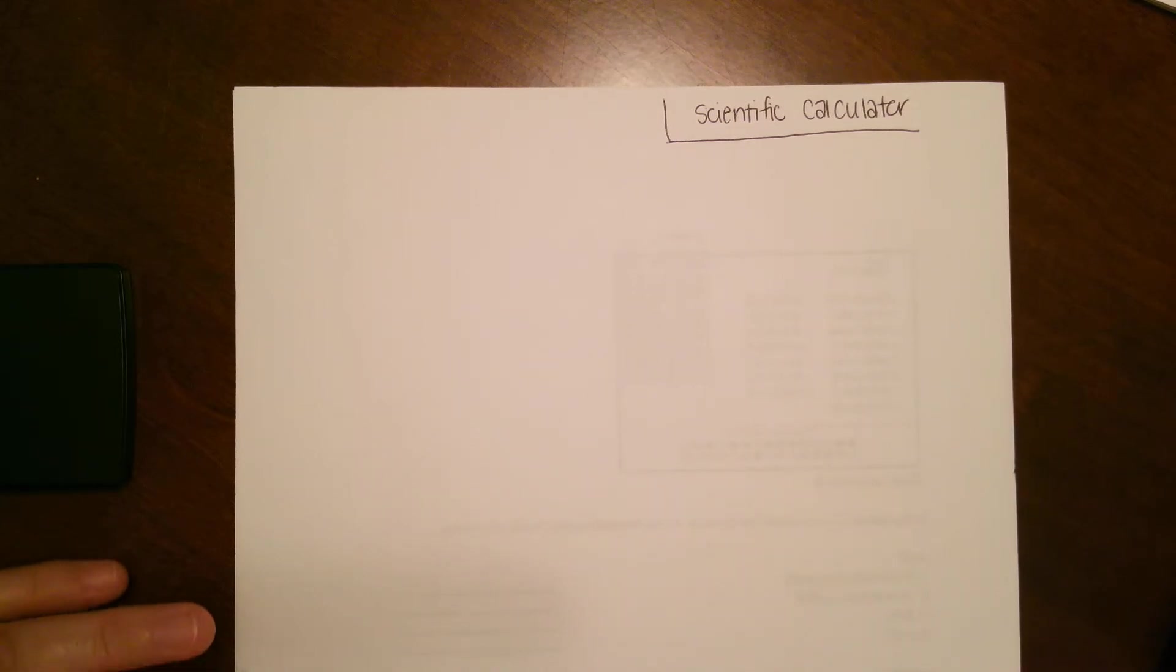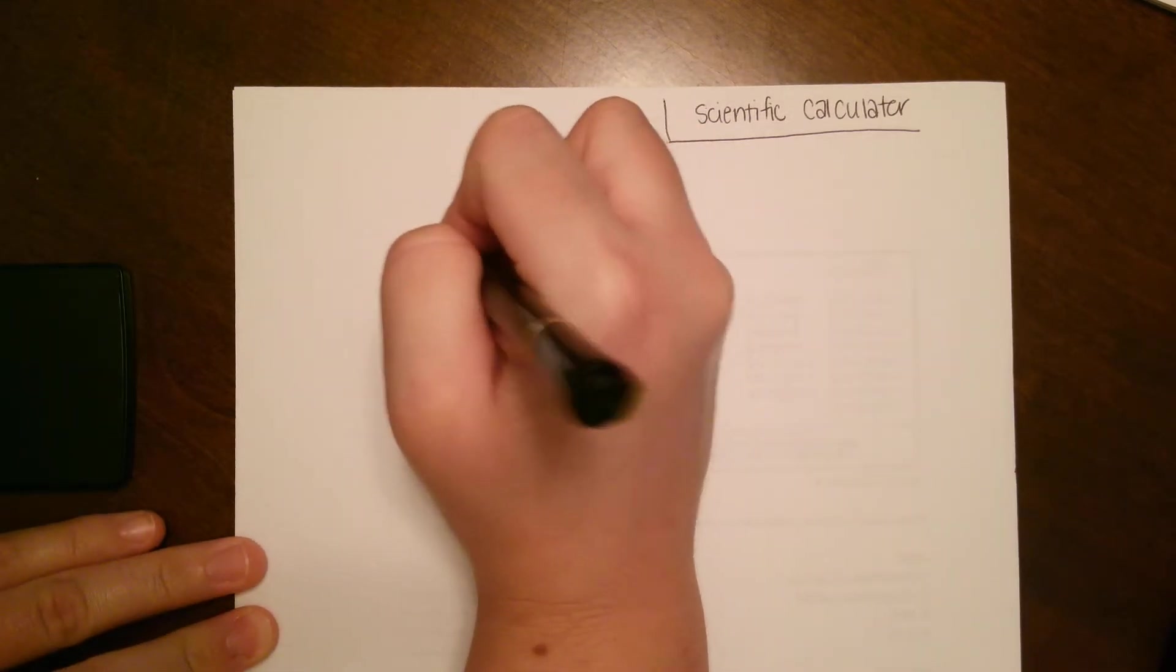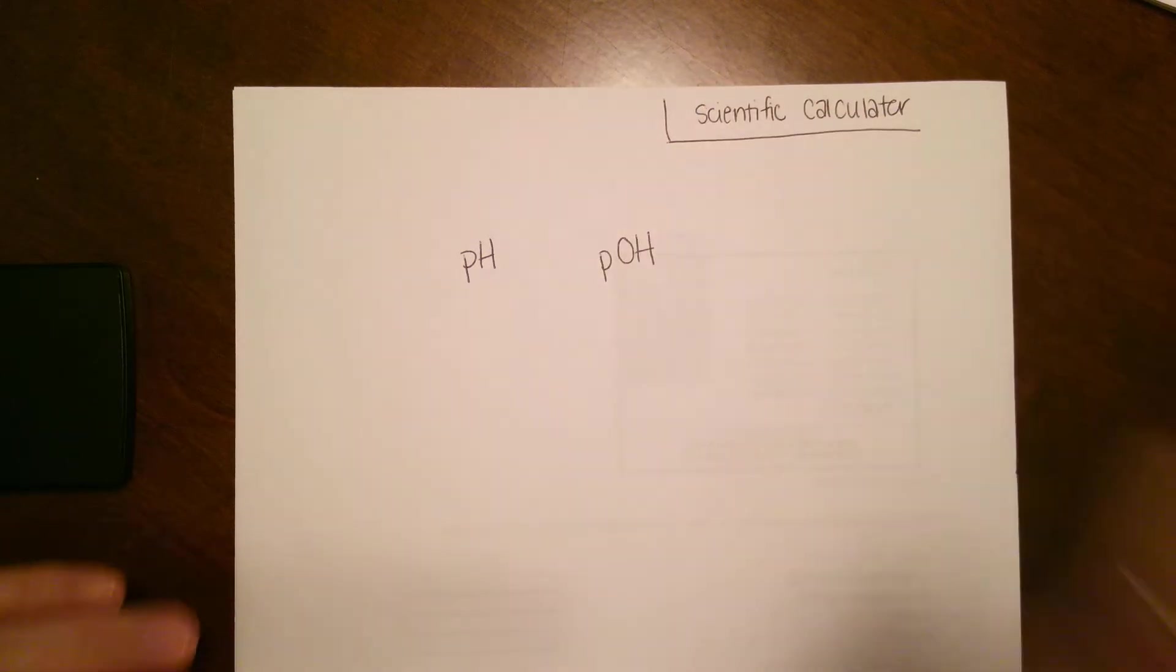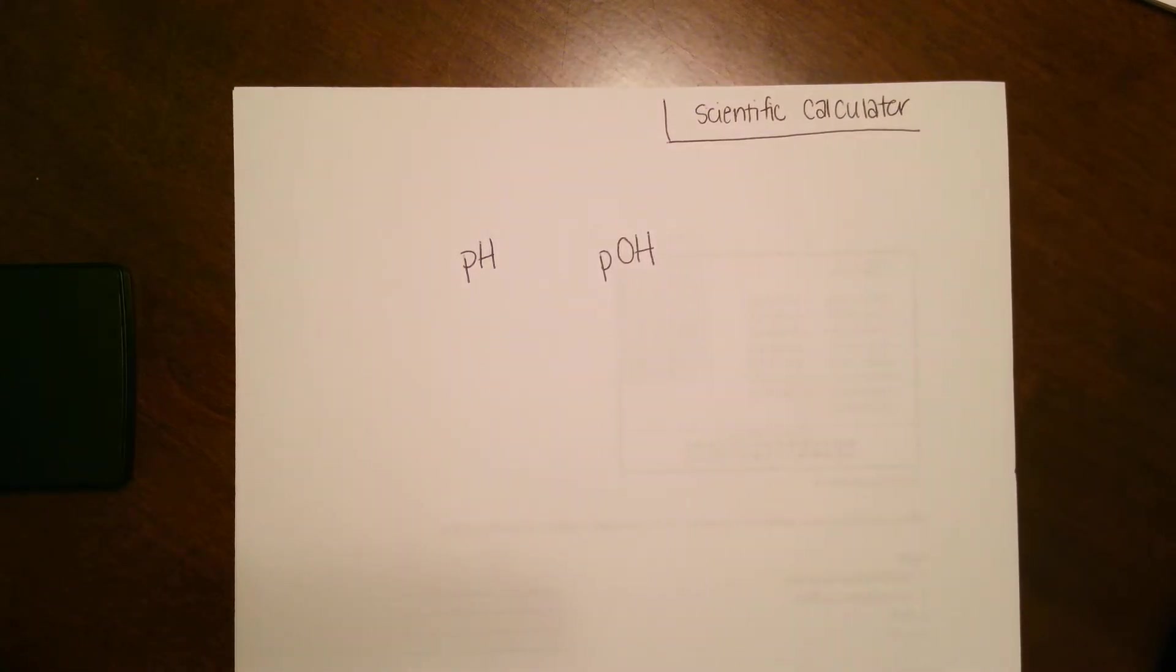The first thing we have to review is our pH and pOH. The way I like to think about it is that our pH and pOH have really direct relationships. The equations were posted, but this hopefully will clear it up just a little bit. So I like to think of it as train tracks.